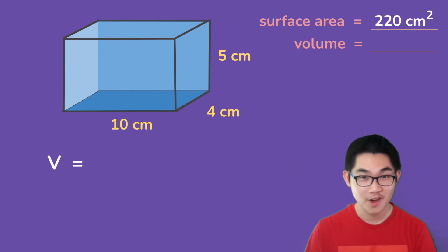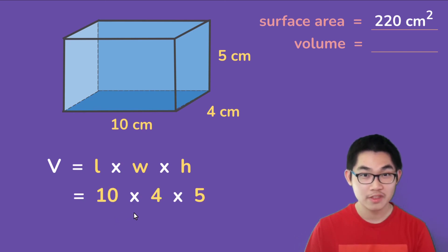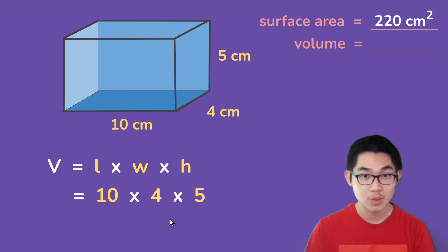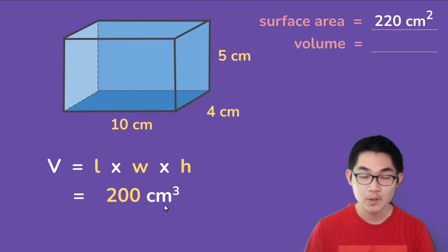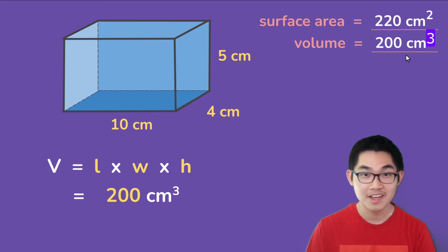How about the volume? Remember the formula is length times width times height. The length is 10 centimeters, the width is 4 centimeters, and the height is 5 centimeters. So 10 times 4 times 5 equals 200 centimeters to the power of 3. Don't forget to include your units at the end — the volume of this rectangular prism is 200 centimeters cubed.